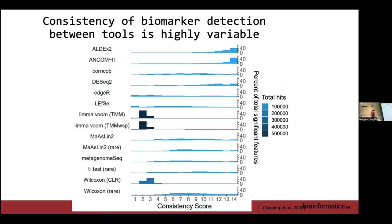To estimate false positive rates, we took control group data, randomized samples within it, and asked how many ASVs we'd detect when we expect no signal. Most tools controlled false positives reasonably well, but limma-voom showed erratic behavior — working fine most of the time, then reporting many spurious significant features. edgeR and NFC sometimes reported up to 2–5% of ASVs as significant when they shouldn't be. That's pretty depressing.